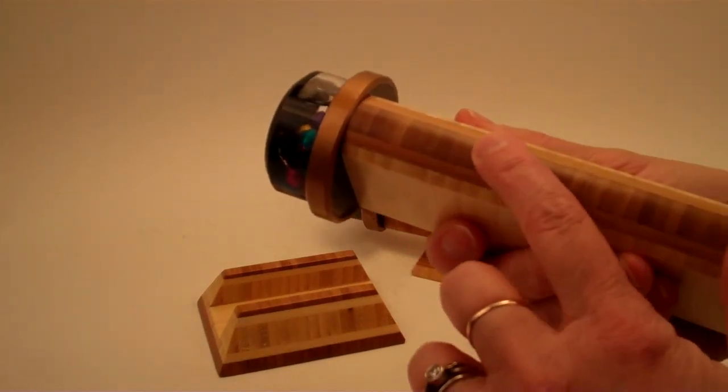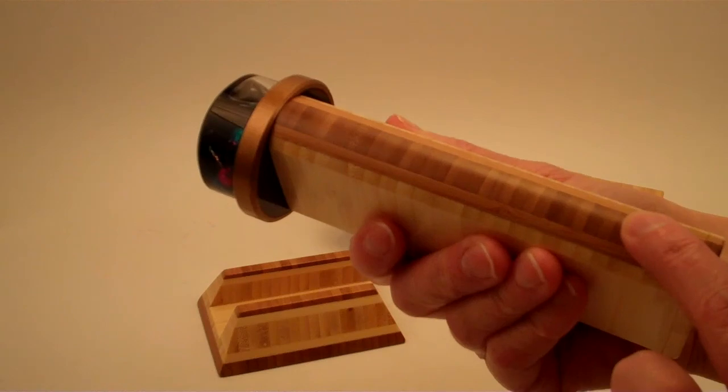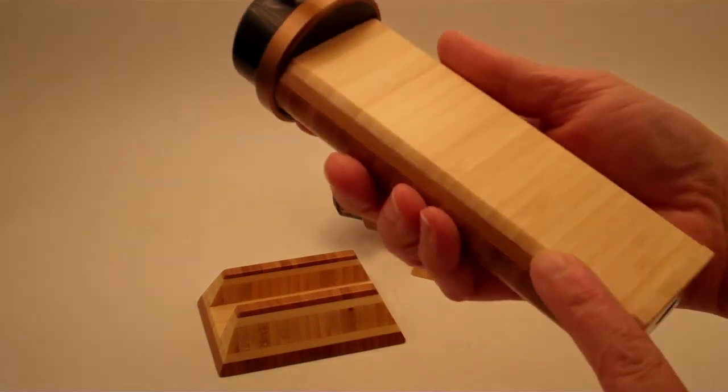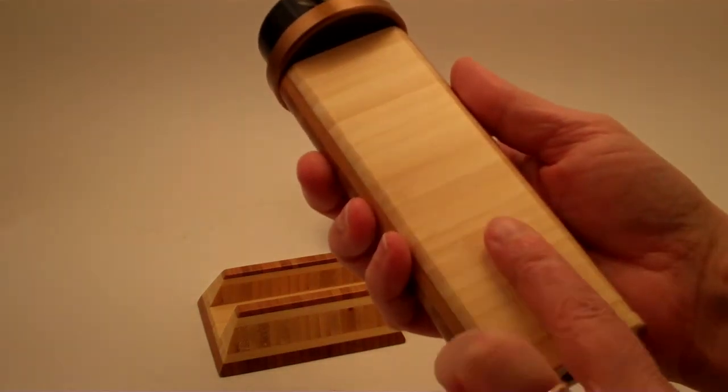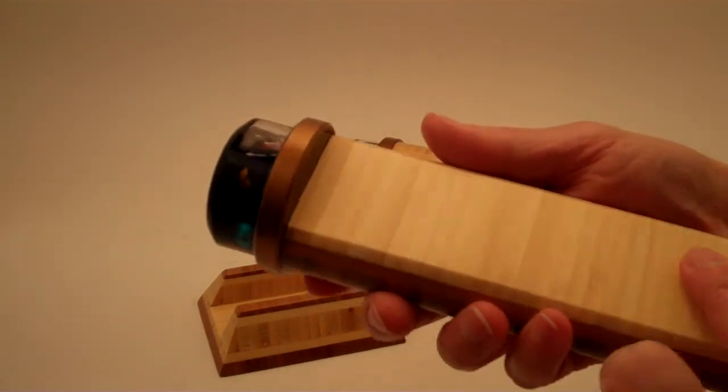Here we have the cross cut of the bamboo where it shows the xylem of the bamboo grass, and here is the parallel cut where it shows the bamboo like the wood grain.